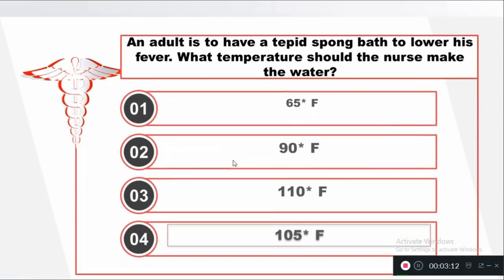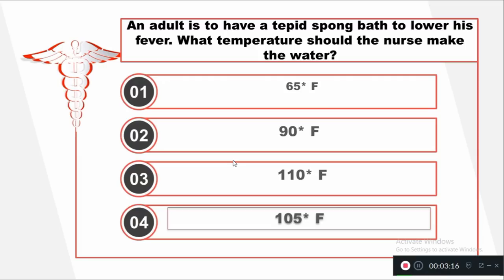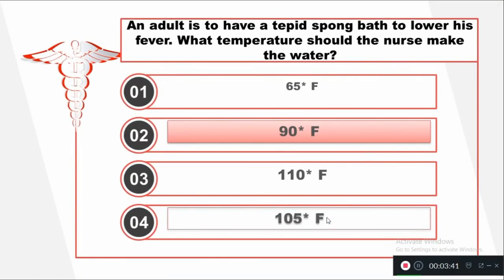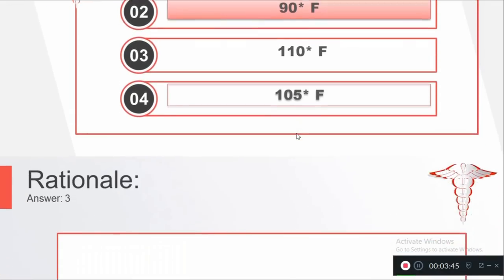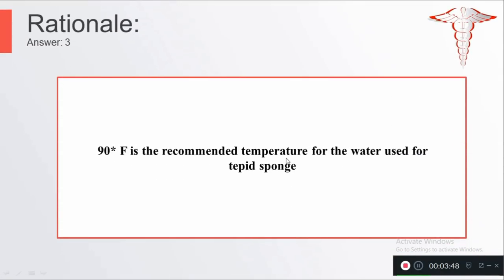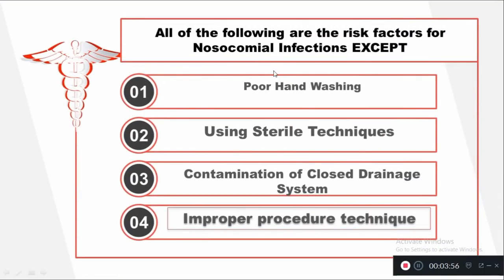Question number four: An adult is to have a tepid sponge bath to lower his fever. What temperature should the nurse make the water? Option one: 65°F. Option two: 90°F. Option three: 110°F. Option four: 105°F. The right answer is 90 degrees Fahrenheit, which is the recommended temperature for water used in a tepid sponge bath.